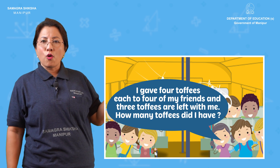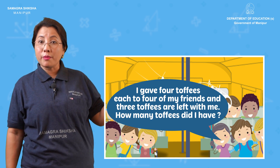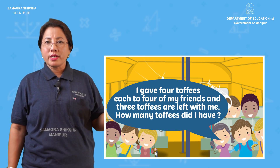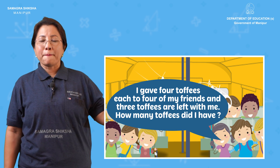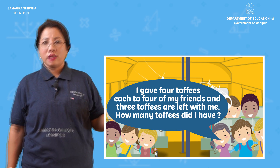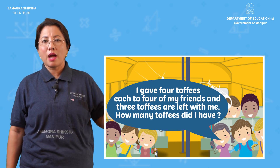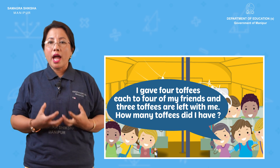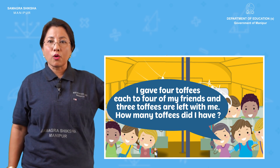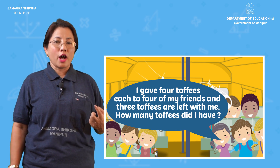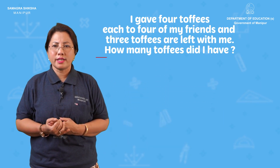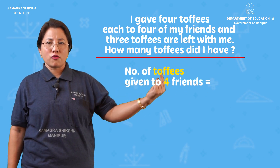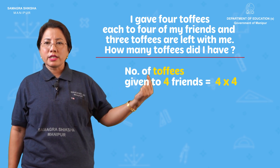I gave four toppies to each of my four friends and three toppies are left with me. How many toppies did I have? Number of toppies given to four friends: four times four — that is 16 toppies.